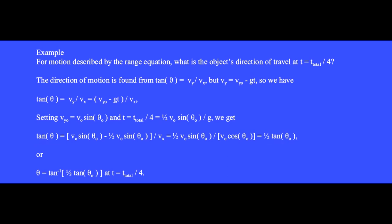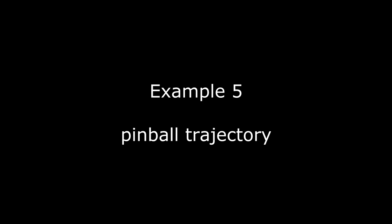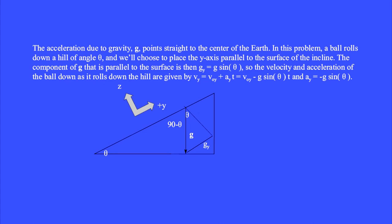In another problem, you'll find the direction of travel when t is 3 quarters of the total time. First, we look at acceleration on an inclined plane. This is a hill that's tilted by angle θ. The acceleration due to gravity g points straight to the center of the earth. In this problem, a pinball rolls down a hill of angle θ. We'll choose to place the y-axis parallel to the surface of the incline. We'll need the component of the vector g, g_y, that's parallel to the y-axis along the surface of the inclined plane.